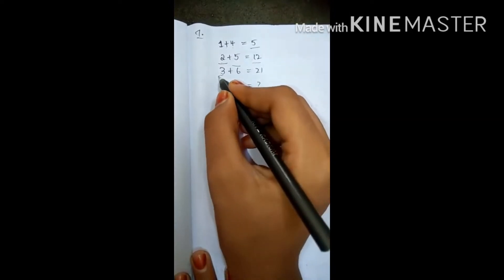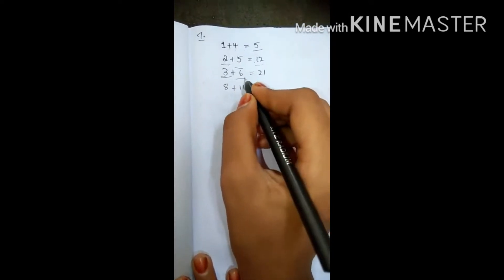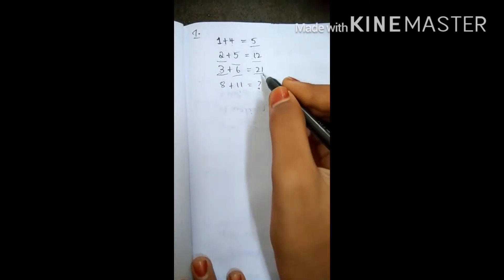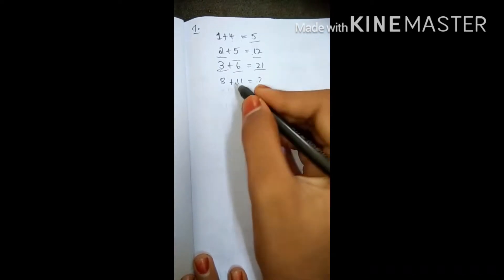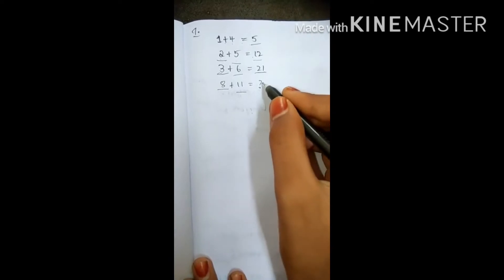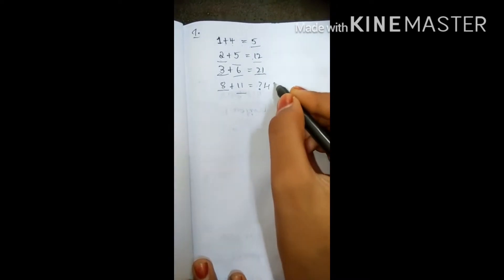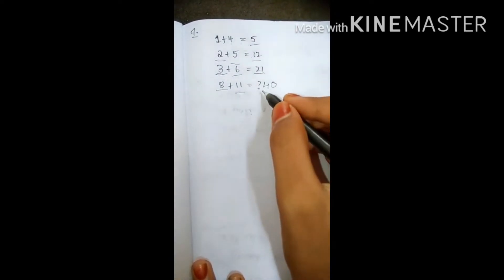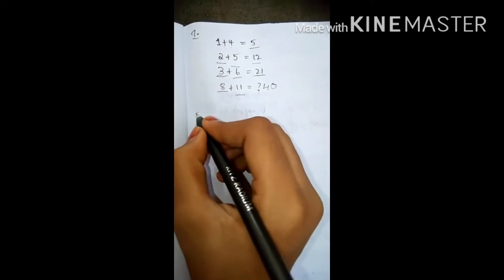Like that only, 12 plus 3 is 15, 15 plus 6 equals 21. Like that only, 21 plus 8 equals 29, 29 plus 11 equals our answer is 40. Our perfect answer is 40.